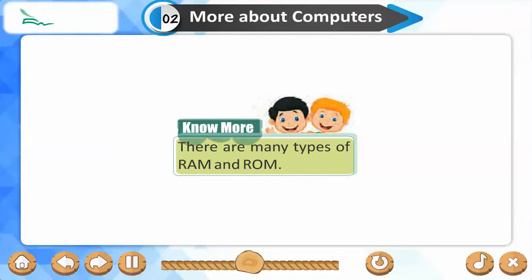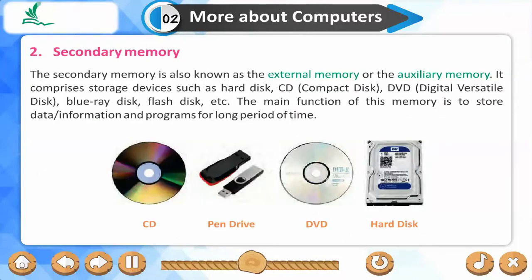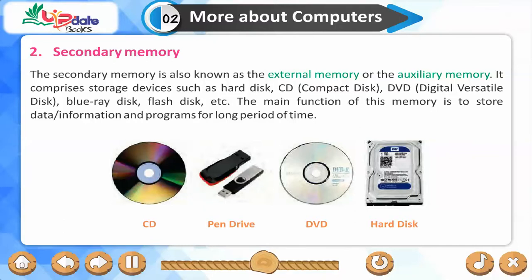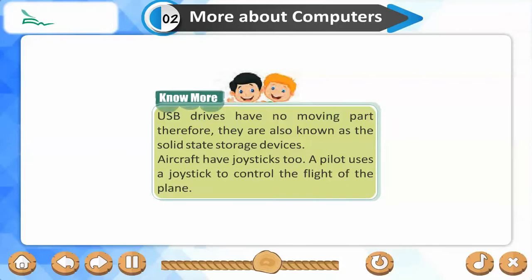There are many types of RAM and ROM. Secondary memory, also known as external or auxiliary memory, comprises storage devices such as hard disk, CD (compact disk), DVD (digital versatile disk), Blu-ray disk, and flash disk. Its main function is to store data, information, and programs for long periods of time. USB drives have no moving parts and are therefore known as solid-state storage devices.